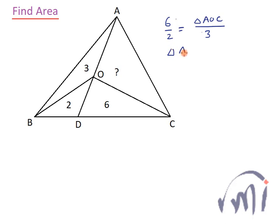So the area of AOC will be equal to 6 multiplied by 3 divided by 2 — that is 9. It looks very simple, but why is it so?